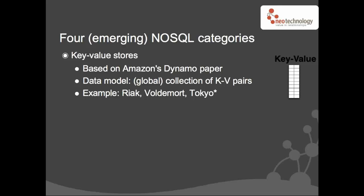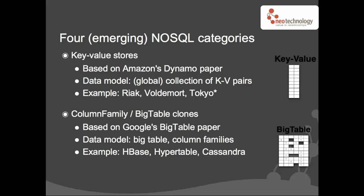That's the first category. The second category is the column family or Bigtable clones. These are all based on Google's Bigtable paper. Google basically did the same thing as Amazon — they said they managed to push their systems to reasonable scale, and they did this not just by using a SQL database but also alternative implementations. In fact, they had to build their own, and they called it Bigtable.